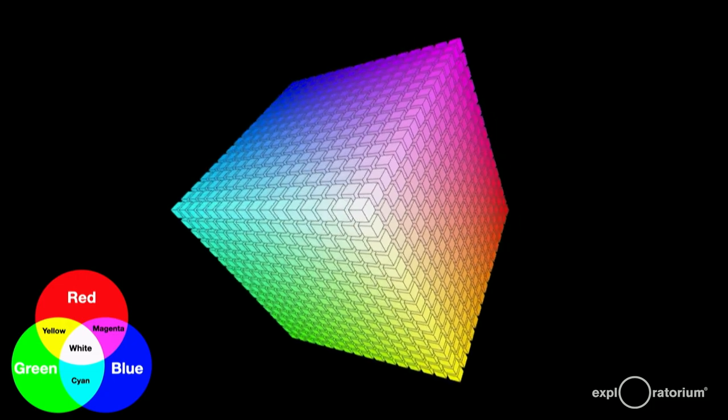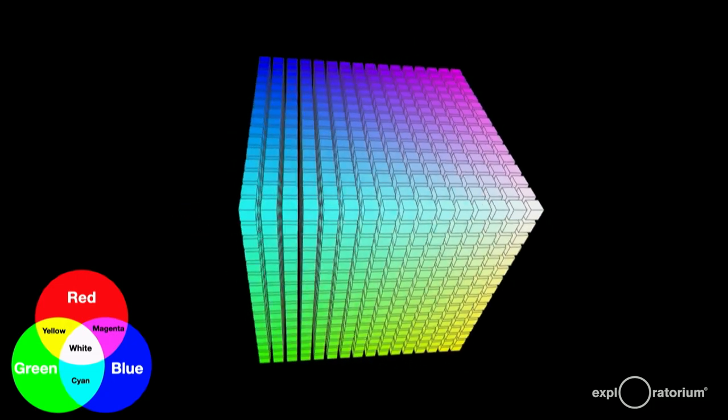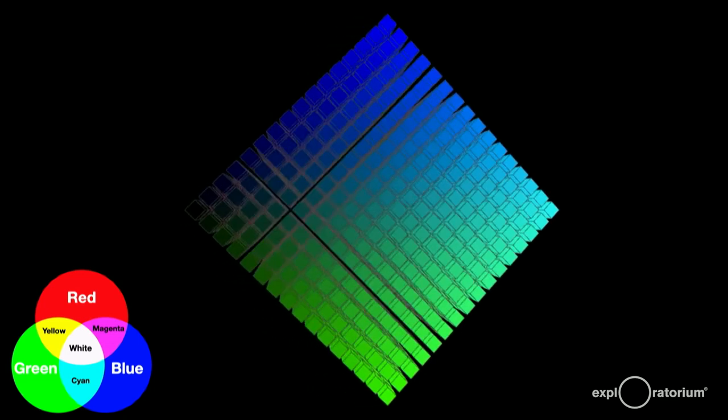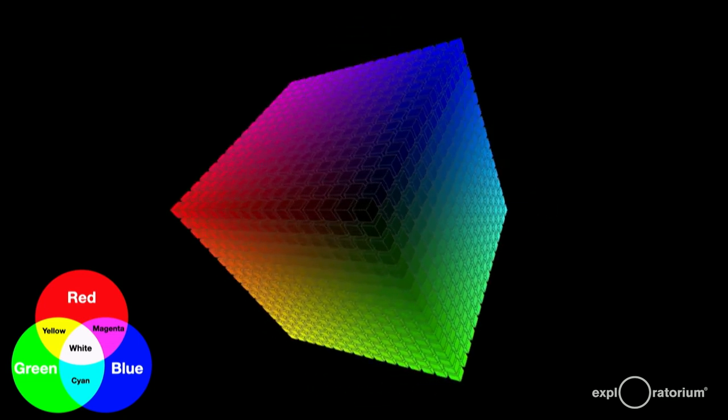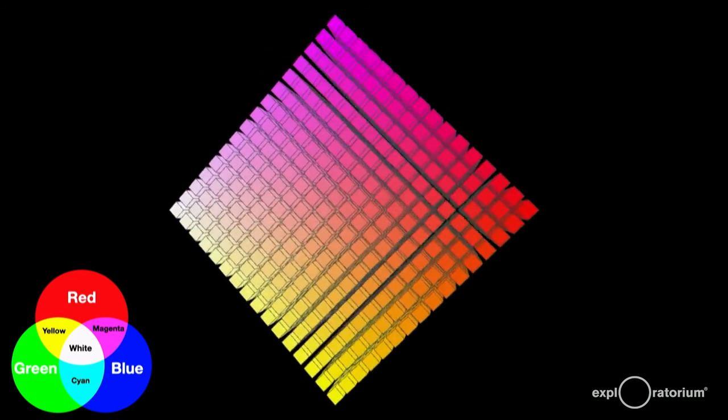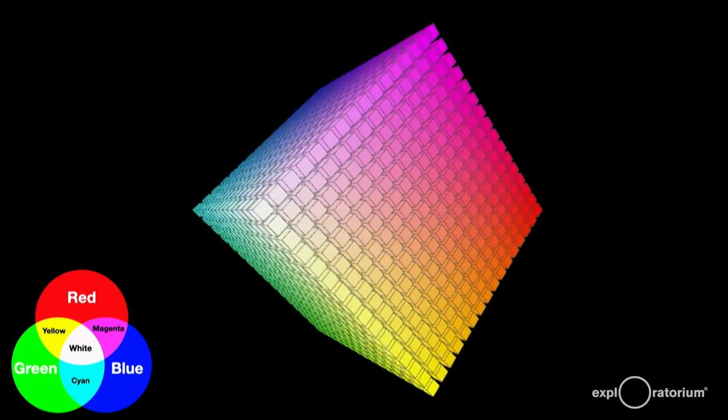Red is diagonally opposite its complement, cyan. Green is opposite its complement, magenta. And blue is opposite yellow. Also, white and black are diagonally opposite each other.